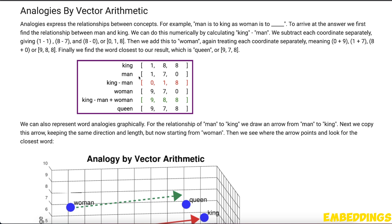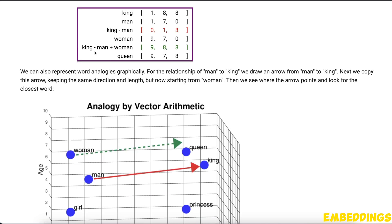The best part is you can actually do some arithmetic and computations on these semantic representations. For example, if you take the vector that represents a king and subtract man from king, the resultant vector is going to be closer to a woman. Similarly, if you subtract man from king and then add woman, you will get a vector which is going to be very close to queen.